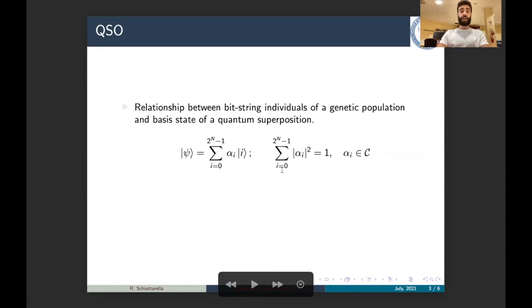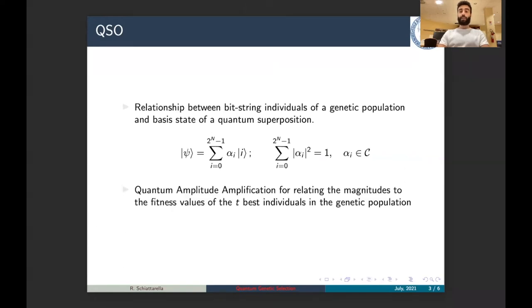So the idea of QSO is to relate individuals of a genetic population to basis states in the quantum state, as here reported, in a way that the measurement operation is the operation that selects one of the basis states, and so selects the relative individuals for the next generation of the genetic calculation. To ensure the fact that individuals with the highest fitness values have the highest probability to be measured, we used a properly modified version of quantum amplitude amplification algorithm in a way to perform phase rotation, in a way that the aforementioned ranking is respected.